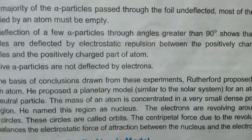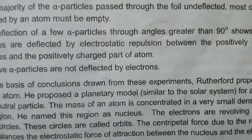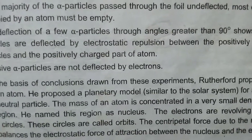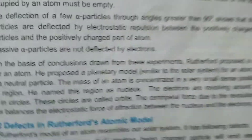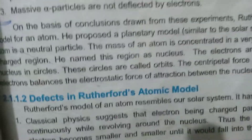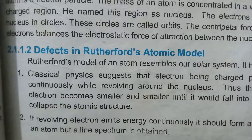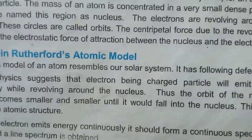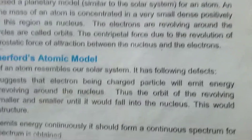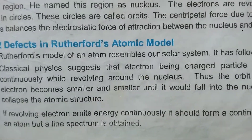The second defect is that if revolving electrons emit energy continuously, they should form a continuous spectrum. However, a line spectrum is actually obtained for an atom, not a continuous spectrum. This is a contradiction that Rutherford's model could not explain.